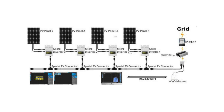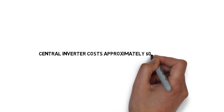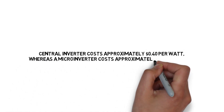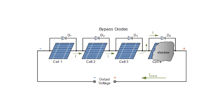The disadvantage of micro inverters is that the cost of electricity per watt increases. It has been reported that central inverters cost approximately 40 cents per watt, whereas micro inverters cost approximately 52 cents per watt.